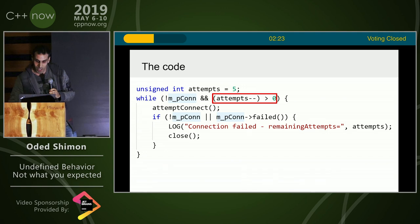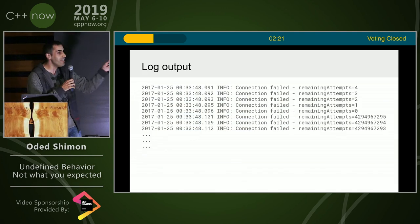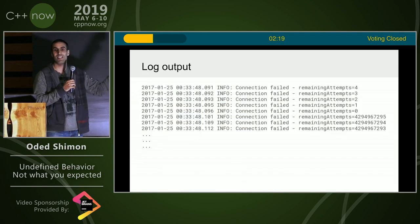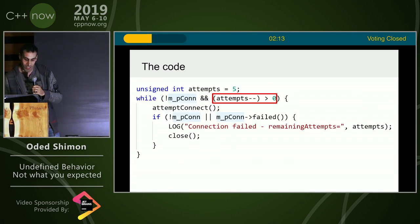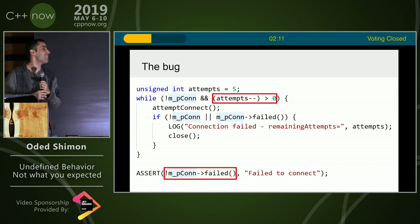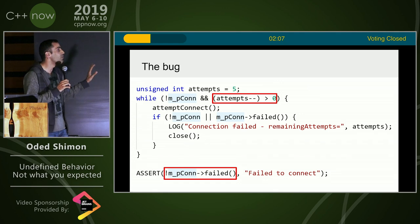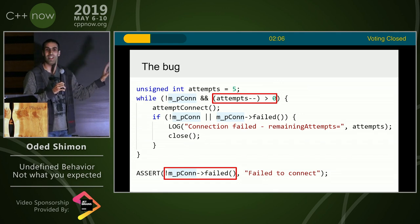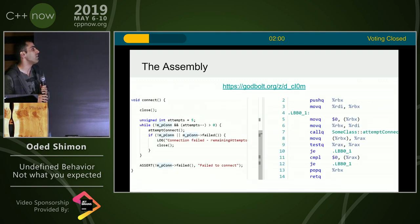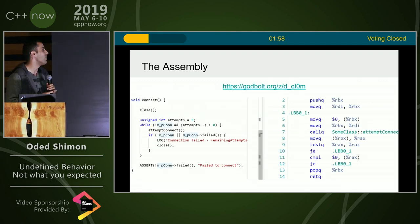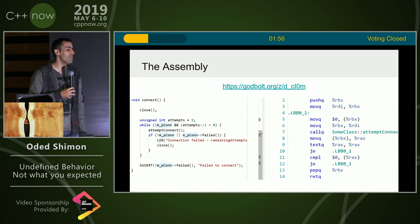Therefore, Clang deleted that if, because it said if it's going to run out of retries that's undefined behavior — so that if can never happen, or if it does it's undefined behavior, so we can delete it. That's what gave this behavior. That's literally the whole thing. If you don't believe it, you can check it out in Godbolt — save the link if you want.